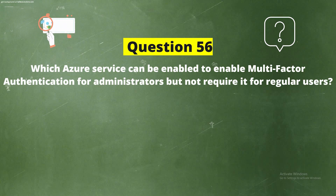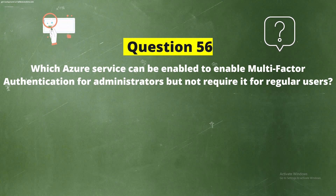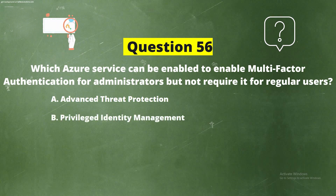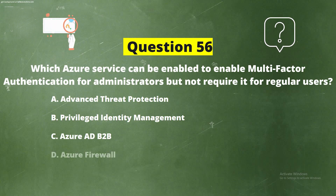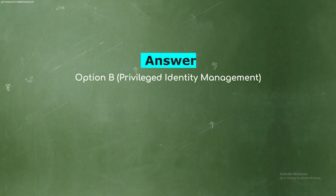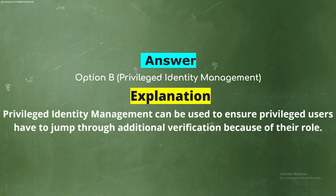Question 56: Which Azure service can be enabled to require multi-factor authentication for administrators but not for regular users? Options: Option A, Advanced Threat Protection; Option B, Privileged Identity Management; Option C, Azure AD B2B; Option D, Azure Firewall. The correct answer is Option B, Privileged Identity Management. Explanation: Privileged Identity Management can be used to ensure privileged users have to go through additional verification because of their role.